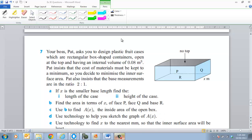Okay guys, how are you going? We'll have a look at question 7 now. Obviously, if you read the question, we've got a rectangular box here. We know the volume of the box must be 0.08 metres cubed. And obviously, it needs to have materials that are going to keep the cost to a minimum. And Pat has given you some information that the base measurements are in the ratio of 2 to 1.